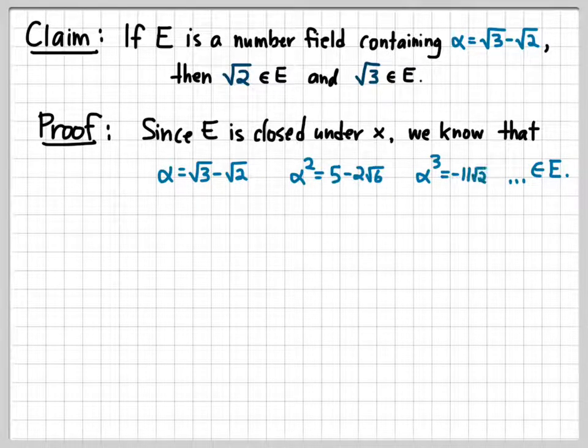Well, if α is √3 - √2, we can directly compute that α² is 5 - 2√6, and α³ is -11√2 + 9√3.